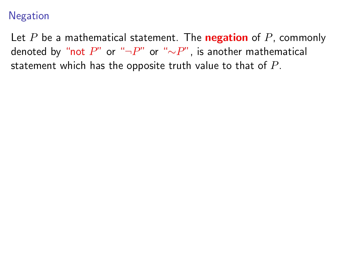Let p be a mathematical statement. The negation of p is another mathematical statement which has the opposite truth value to that of p. So for instance, when p is true, then the negation of p is false; when p is false, the negation of p is true. The notation for negation of p — you can simply write it as 'not p' or use the negation symbol. Some people also use tilde. In most cases, I will use 'not p' or the more common negation symbol notation.